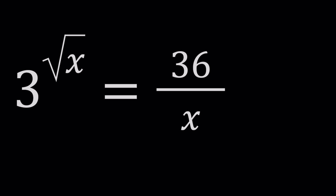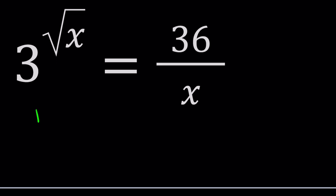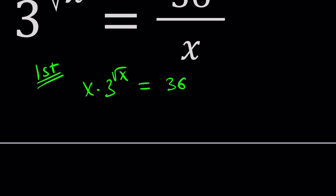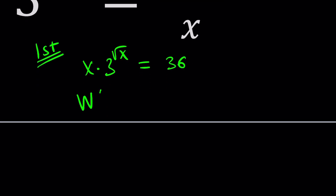First method — I'm going to use my special powers. So we're going to go ahead and first of all cross multiply. That'll give us x times 3 to the power of square root of x equals 36. And then I'd like to use a special function known as Lambert's W function.